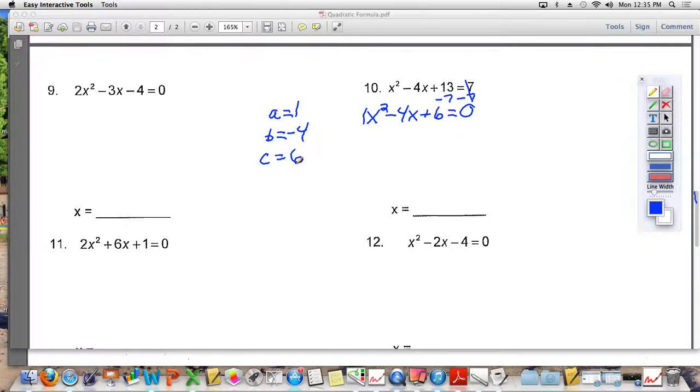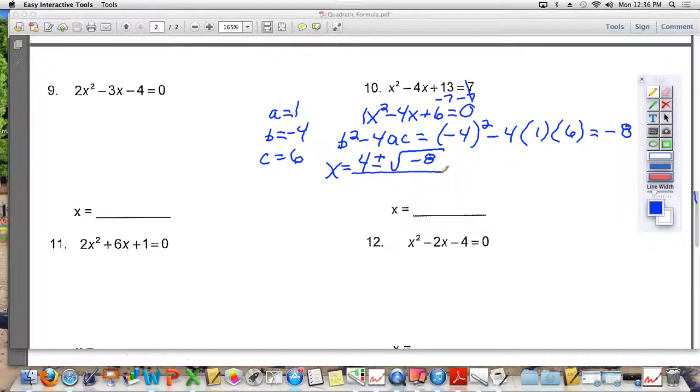Step 2, find the discriminant. The discriminant is b squared minus 4ac. The b value is negative 4. So I put it in parentheses and I square it, minus 4 times the a value, which is 1, times the c value, which is 6. Can you calculate the value of the discriminant for me, please? What do you get? Negative 8. The third thing that we do is plug everything into the formula. So x is equal to the opposite of b, which is 4, plus or minus the square root of what number? Negative 8. And then you divide all of this by 2 times a, which is 2, times 1, which is 2.